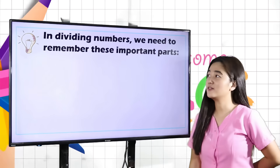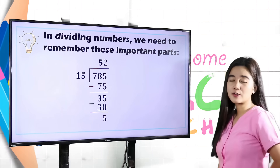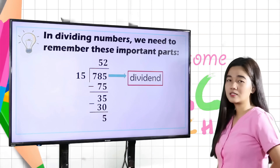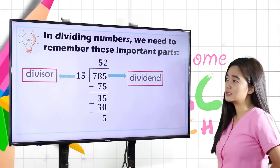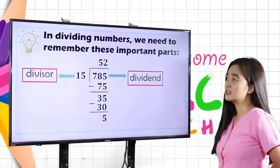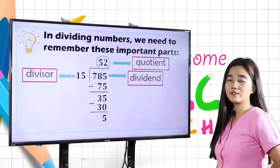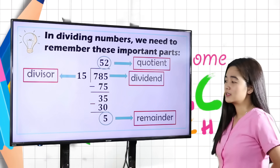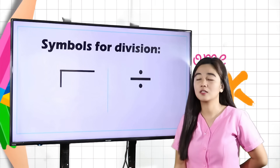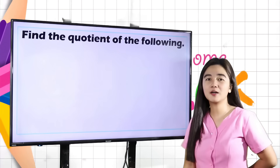In dividing numbers, we need to remember these important parts. First, we have the dividend. Secondly, we have the divisor. Next, we have the quotient. And lastly, we have the remainder. Now, these are the symbols used in division.